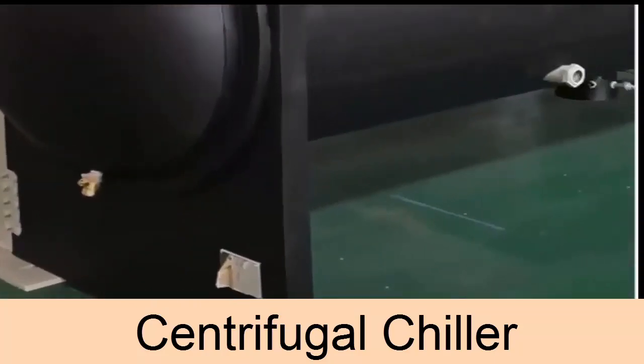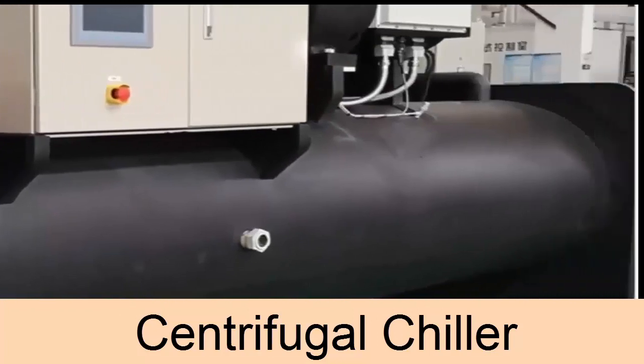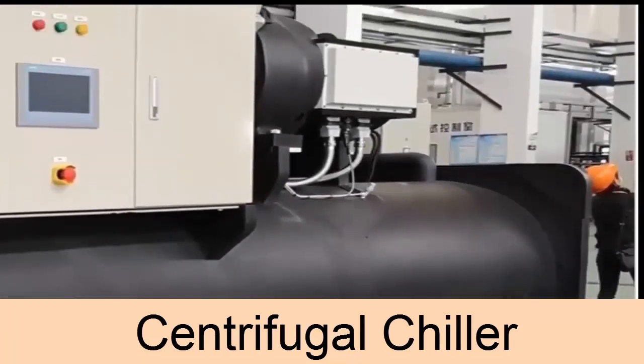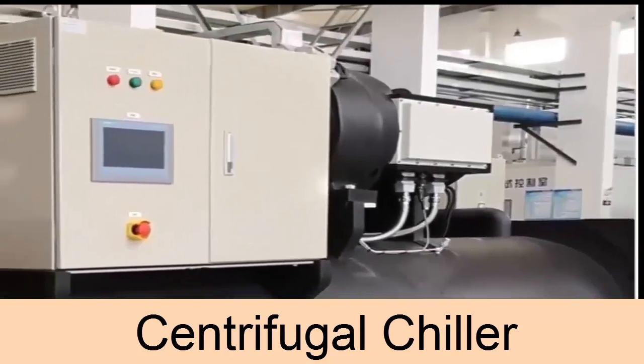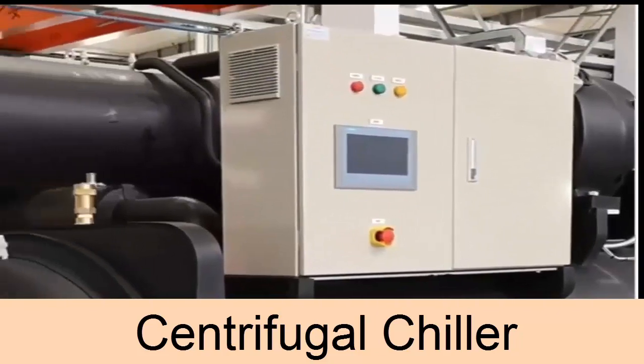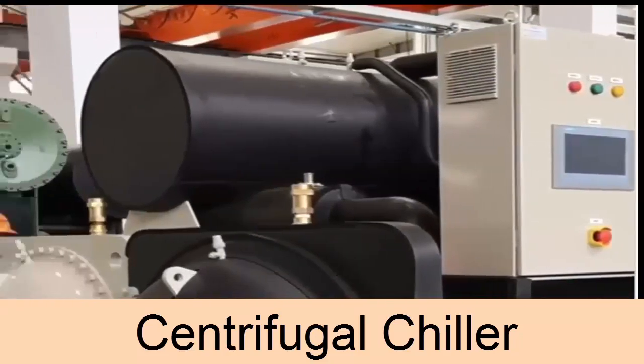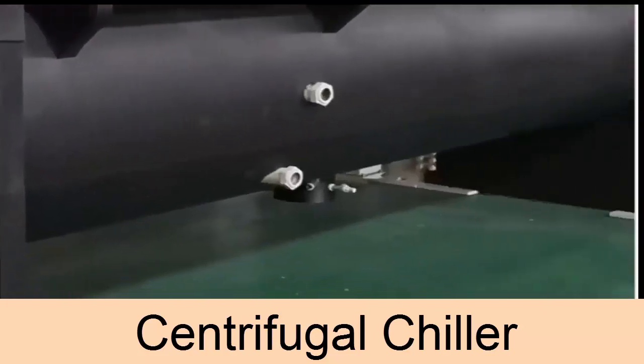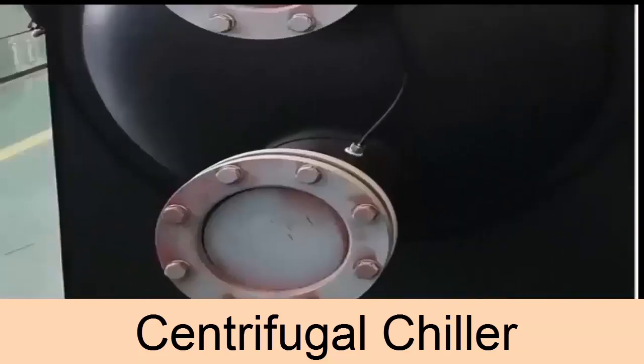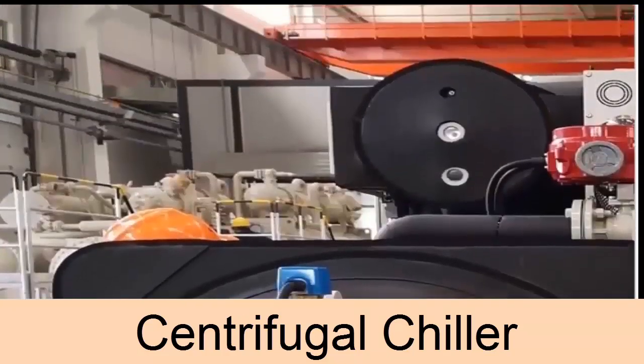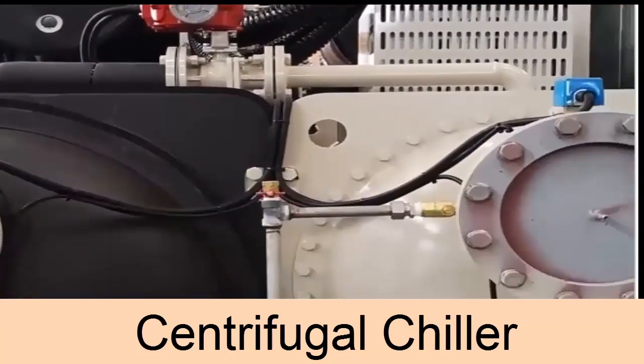Even the chiller that we are going to see in this class also works with a conventional compression refrigeration system. We have the four basic components. The difference will be in the way the compression process is carried out to raise the pressure of the refrigerant. The time has come for the centrifugal compressor that differs from the three previous compressors in something very important.